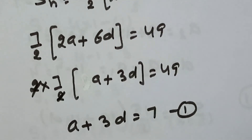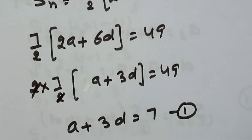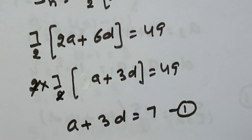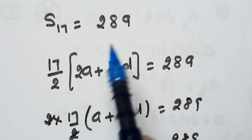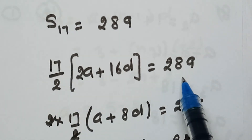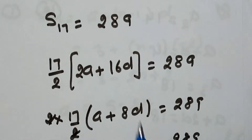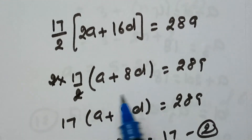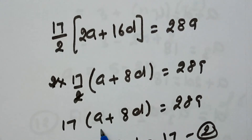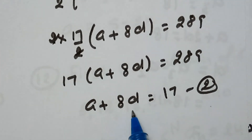So let this be the first equation, from the first condition that sum of 7 terms is 49. Now, second condition: sum of 17 terms is 289, so S17 equals to 289. This can be written as 17 by 2 into 2A plus 16D equals to 289. Taking 2 common, the 2s cancel, giving us 17 into A plus 8D equals to 289, so A plus 8D equals to 17.